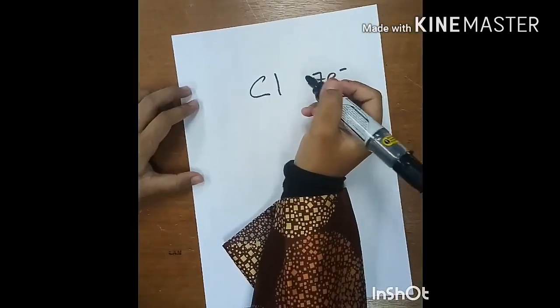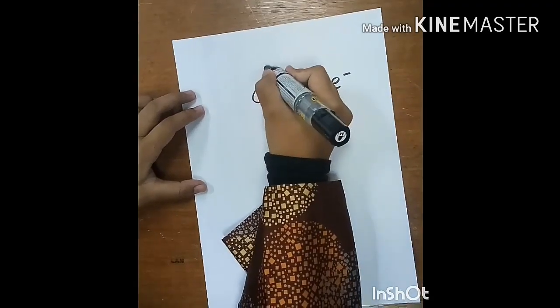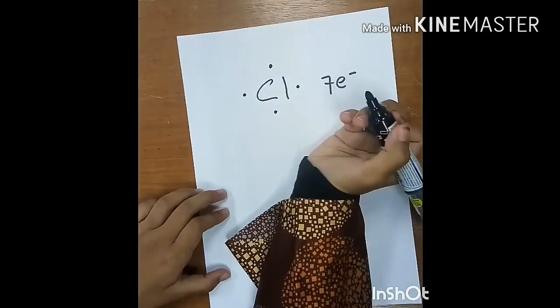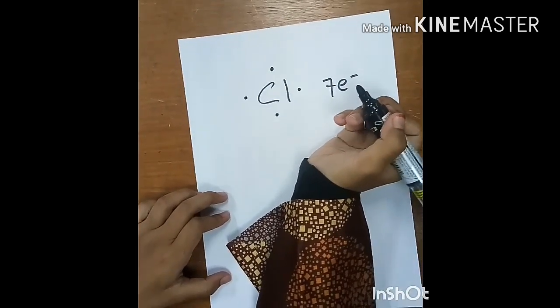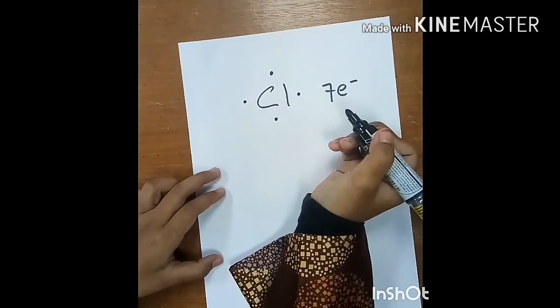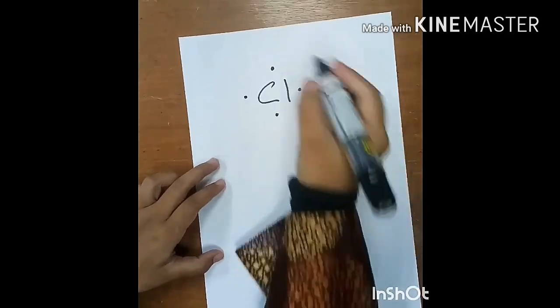The second step is to place one dot at a time on the four sides. Now, we have three more valence electrons left. So, the last step is to pair up all the valence electrons left until all are used.